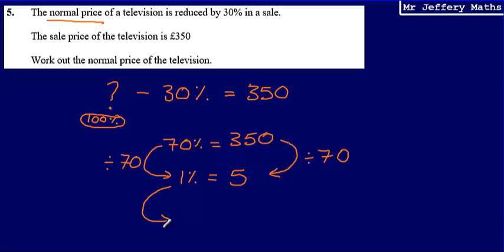From here, what I then need to do is get back to my original amount, my normal price, my 100%. And so to do that, I'm going to simply multiply by 100. So multiplying 5 by 100 is going to give me 500. So the normal price of the television, final answer here is going to be £500.